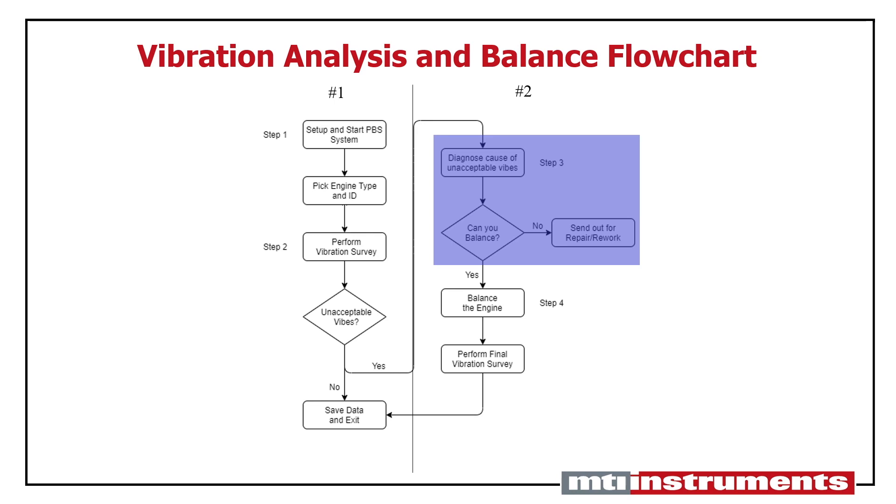At this point in the process, we can open up the PBS system's balance wizard, which will lead us through the balance process into the final part of step four: the final vibration survey or the check run. If vibration levels are acceptable at the end of the final vibration survey, the user has completed the workflow and can disconnect the aircraft. If the user is still not satisfied with the balance results, however, they can return to the top of the right side of the workflow and restart the engine balance procedure.